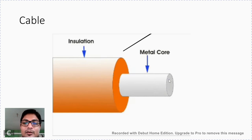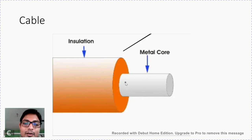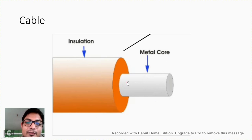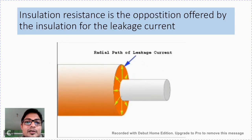So what is insulation resistance? This particular thickness of insulation will definitely offer a barrier for the flow of current from the conductor towards the surface of the insulation or any metallic part. The current will try to move in the radial direction. Therefore insulation resistance is the opposition offered by the insulation for the leakage current.